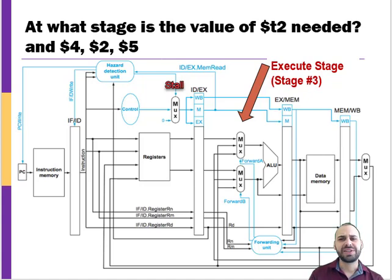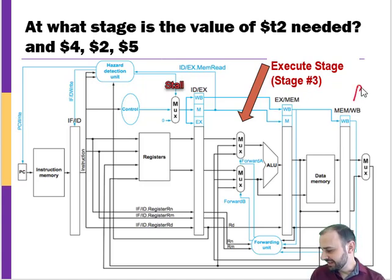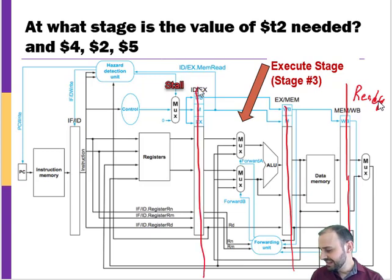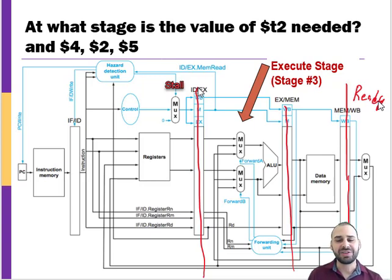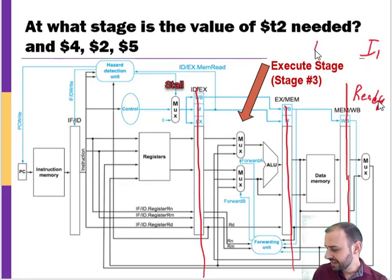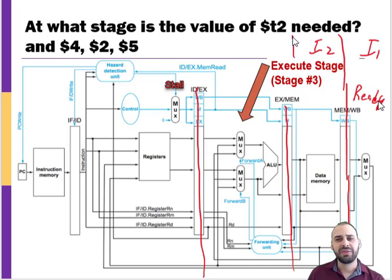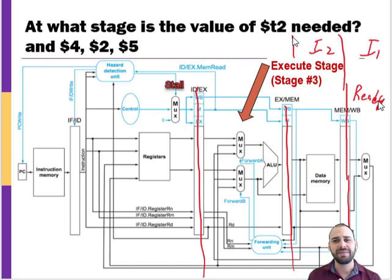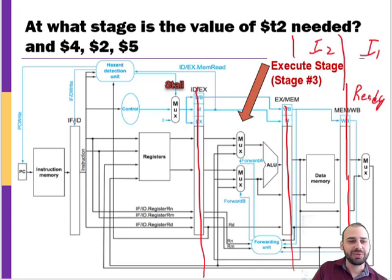At the execute stage is when register 2 is needed, but the value isn't ready until stage 5. If we have two instructions back to back, instruction 2 has already moved past the execute stage where the value was needed. Forwarding cannot fix this data hazard — the load value simply isn't available until later on. We need to do something different.